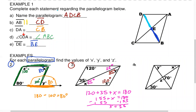Without further ado, number four. Opposite angles are congruent: if you have 30 degrees here, you have 30 degrees on the opposite side of the figure, so X is 30 degrees. I also see a straight line — a linear pair — so 70 and Z must make 180. 180 take away 70 is 110, so Z is 110 degrees.